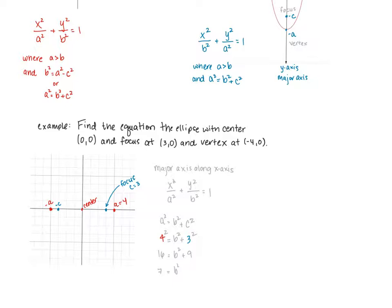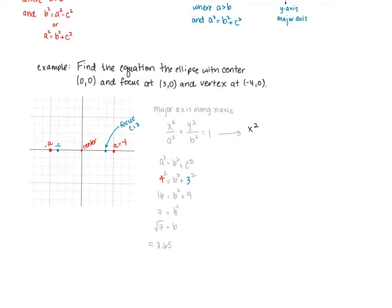b squared equals 7, which could be written as b equals the square root of 7, which is approximately 2.65. This will give us the co-vertices on our ellipse.